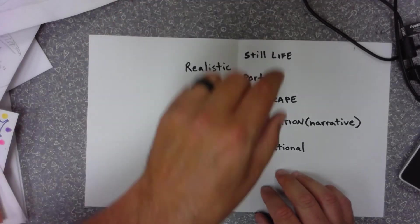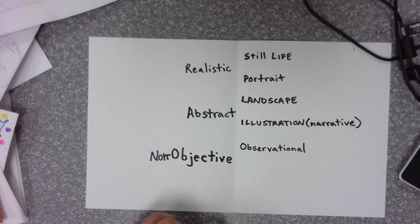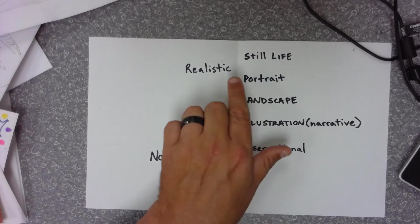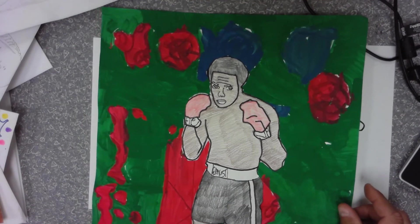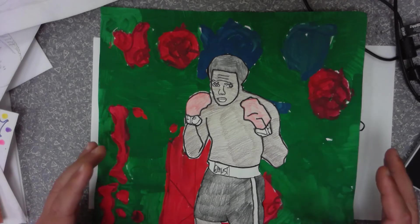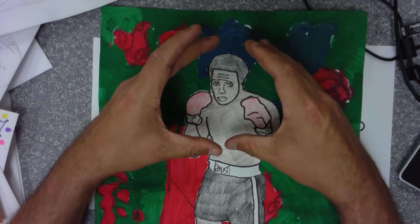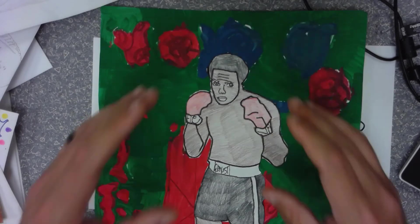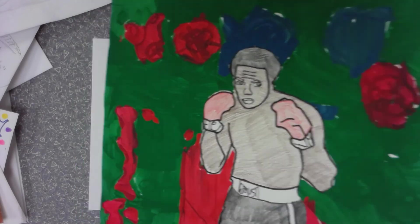Moving forward — a portrait is a drawing of somebody, yourself or somebody else. If it's yourself, then it's a self-portrait. Here's an example of a portrait of boxer Muhammad Ali. It could be the whole body of a person, but oftentimes a portrait is just the head and shoulders. So a portrait is a picture or drawing of a person.